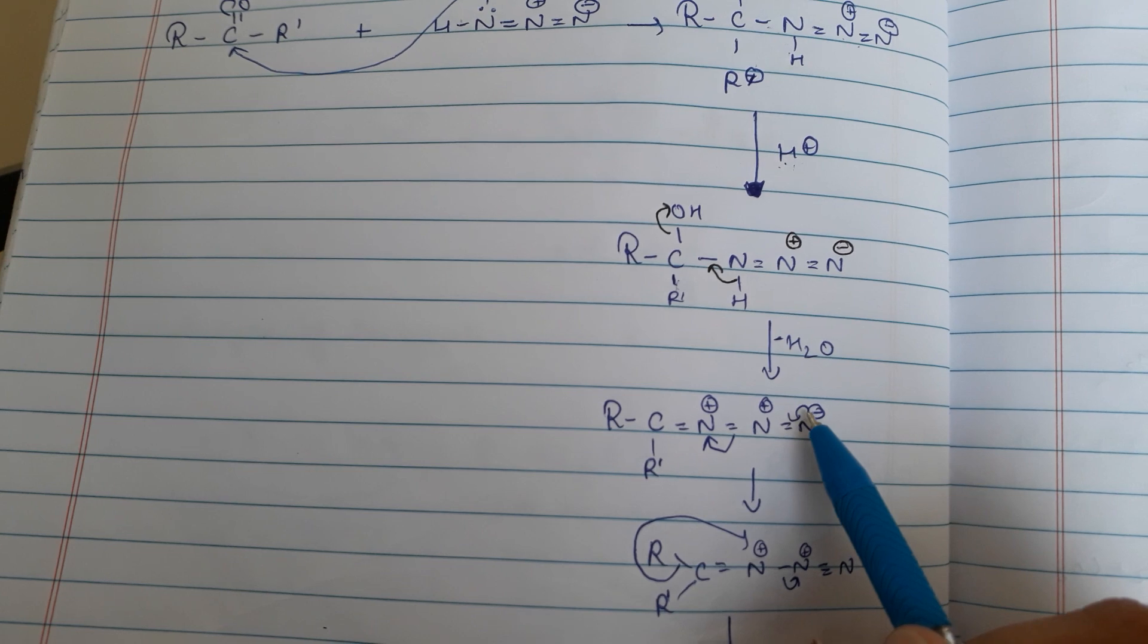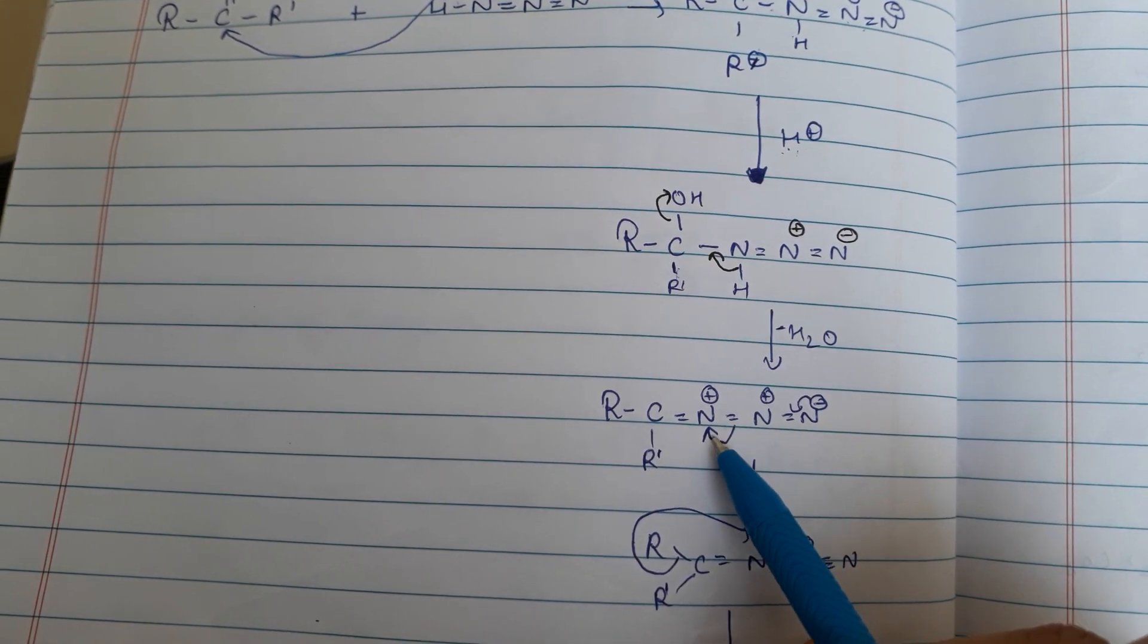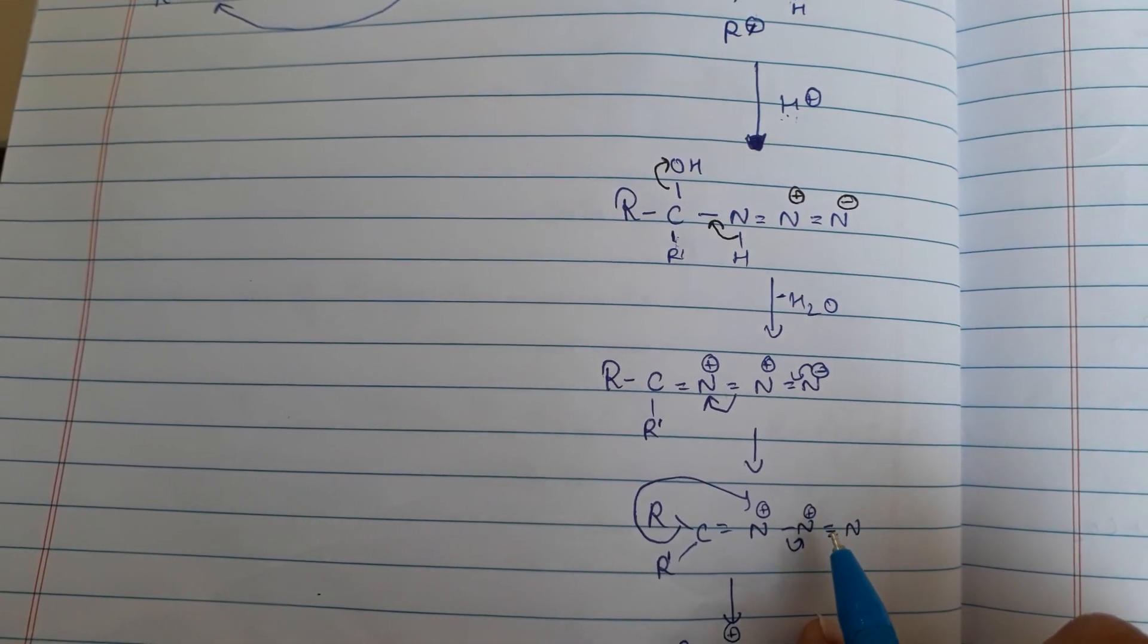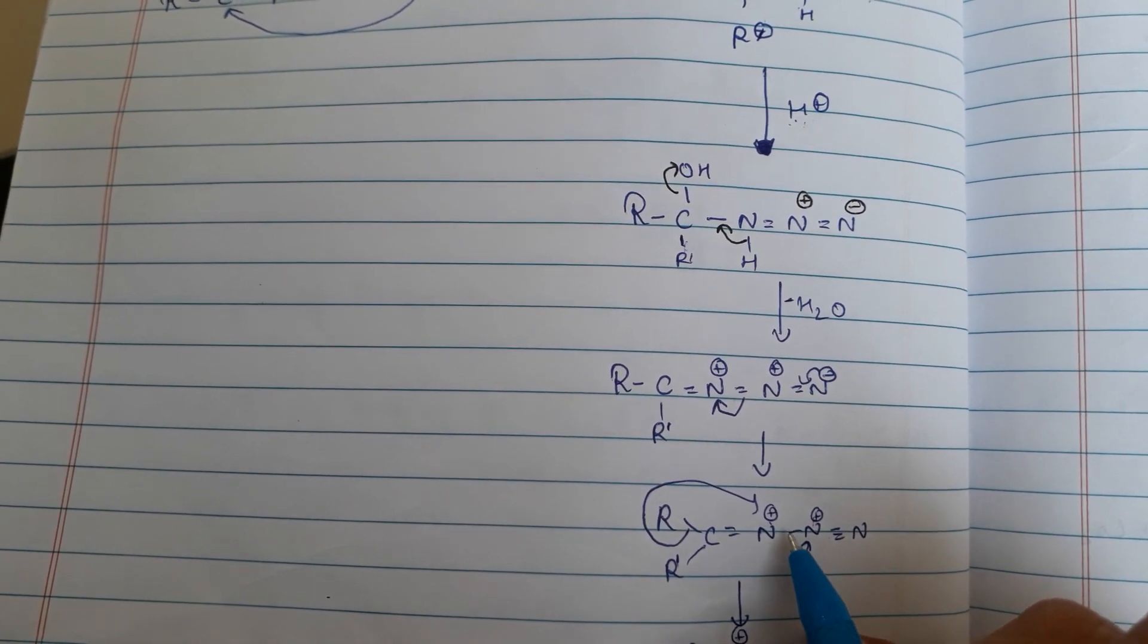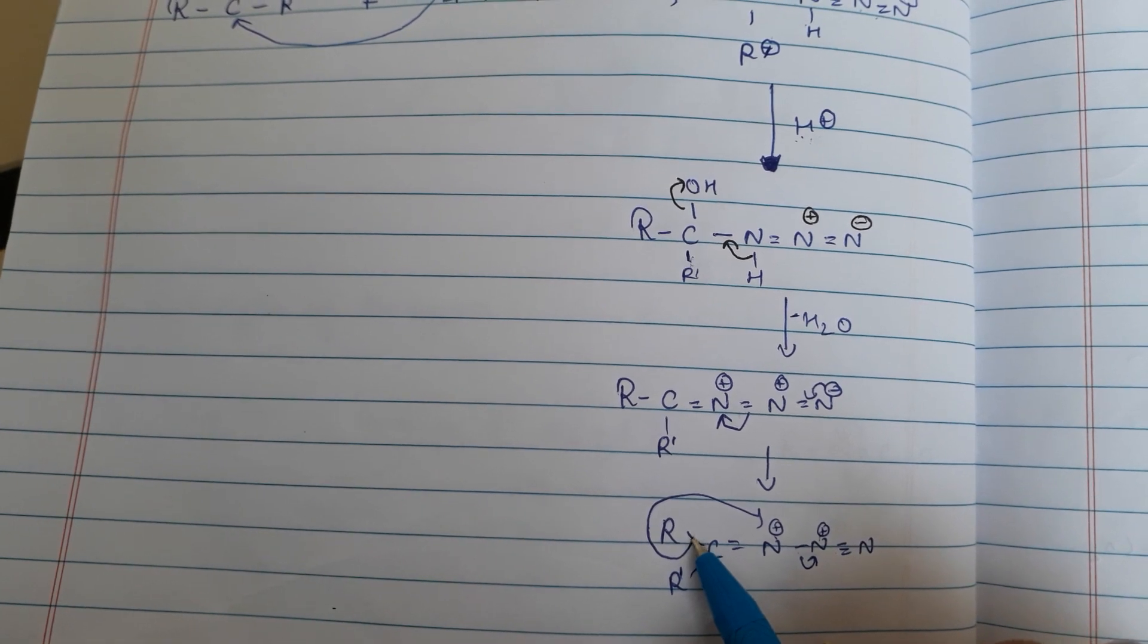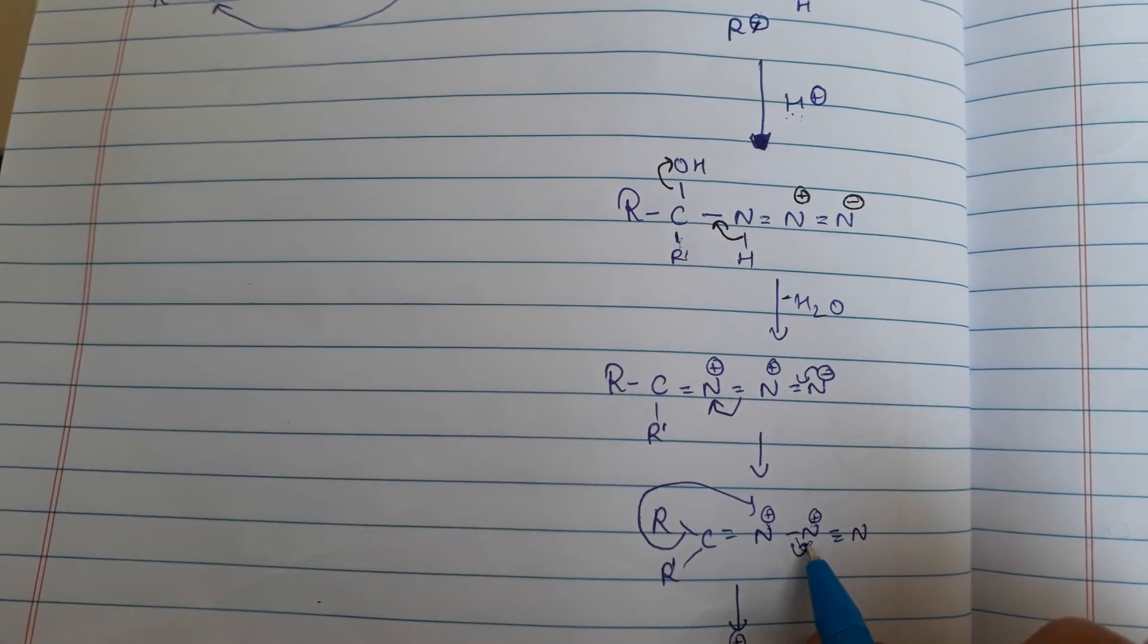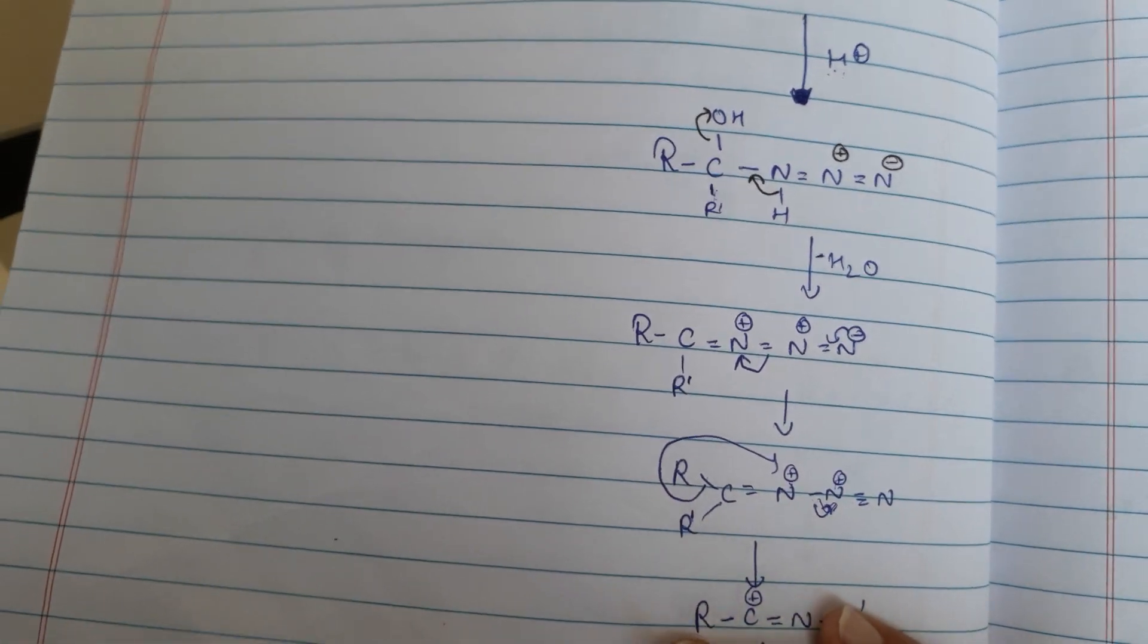This negative charge shifts here and this double bond shifts on that and positive. It will be like triple bond positive. Then this alkyl shifts on that and this will remove from there and it becomes...